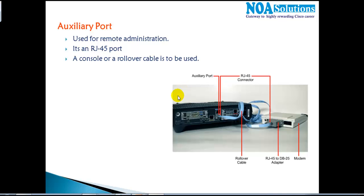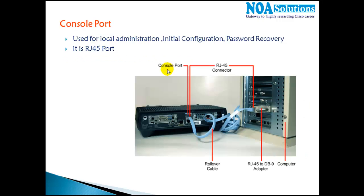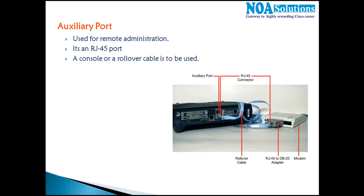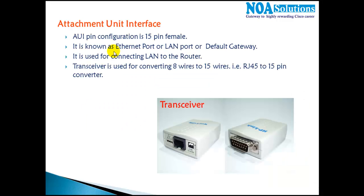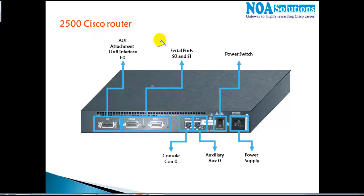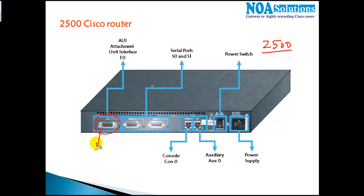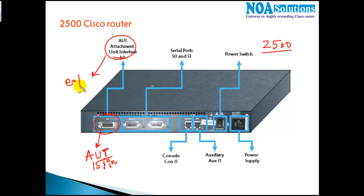Every Cisco router has two administrative ports: the console port (RJ45) for local administration and the auxiliary port for remote administration. For older routers like 2500 or 2600 series used in lab environments, you may find an AUI interface — Attachment Unit Interface — which is a 15-pin connector. This is actually your Ethernet port supporting up to 10 Mbps Ethernet (E0 port).